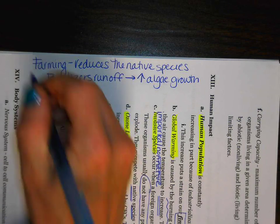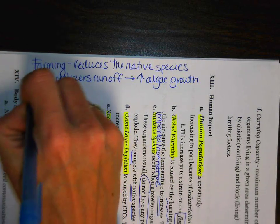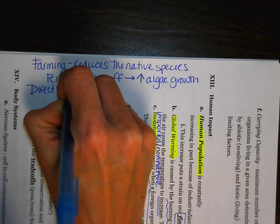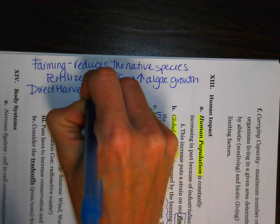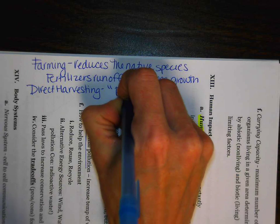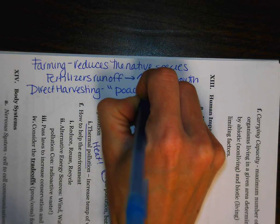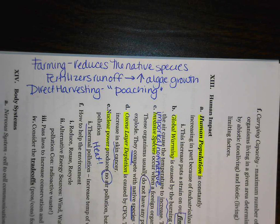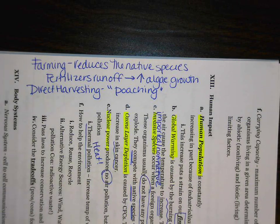Another term you might hear is direct harvesting, which we can think of as poaching. Poaching means going and getting organisms from the environment when it is illegal — think about the elephant tusks that we looked at.